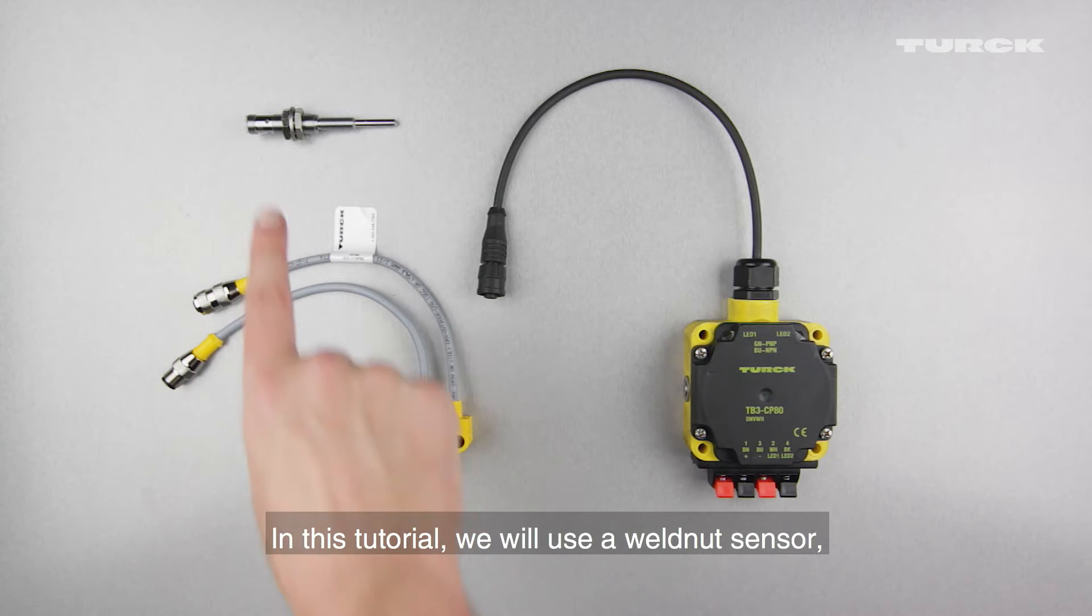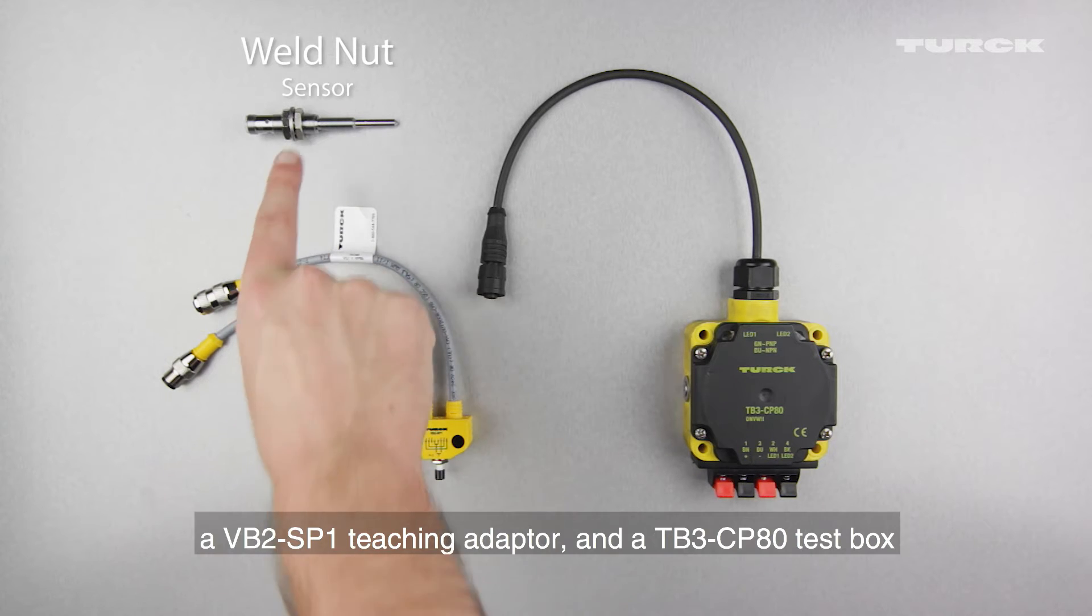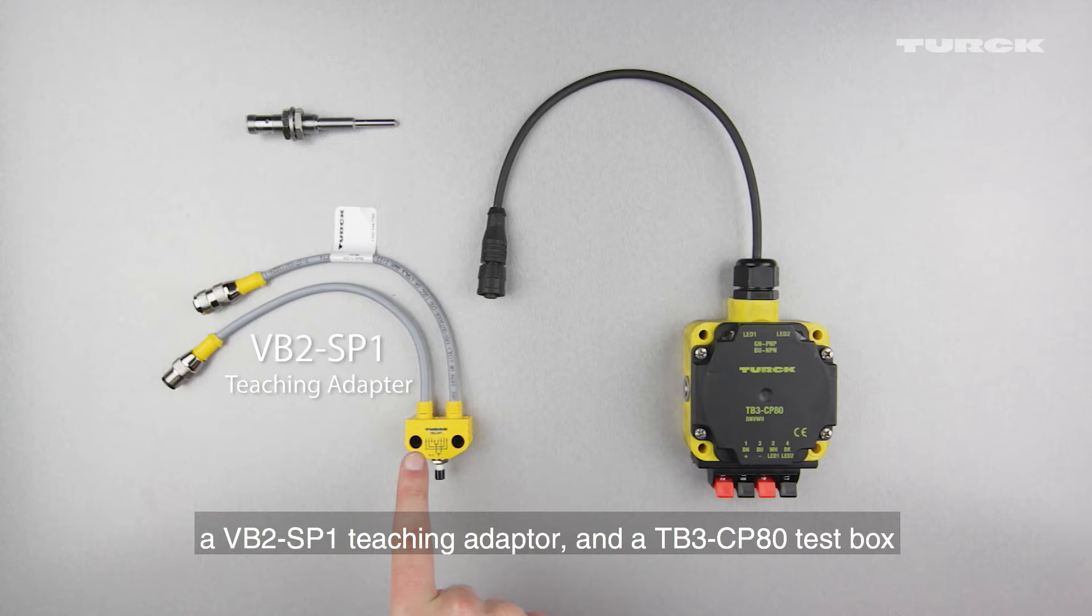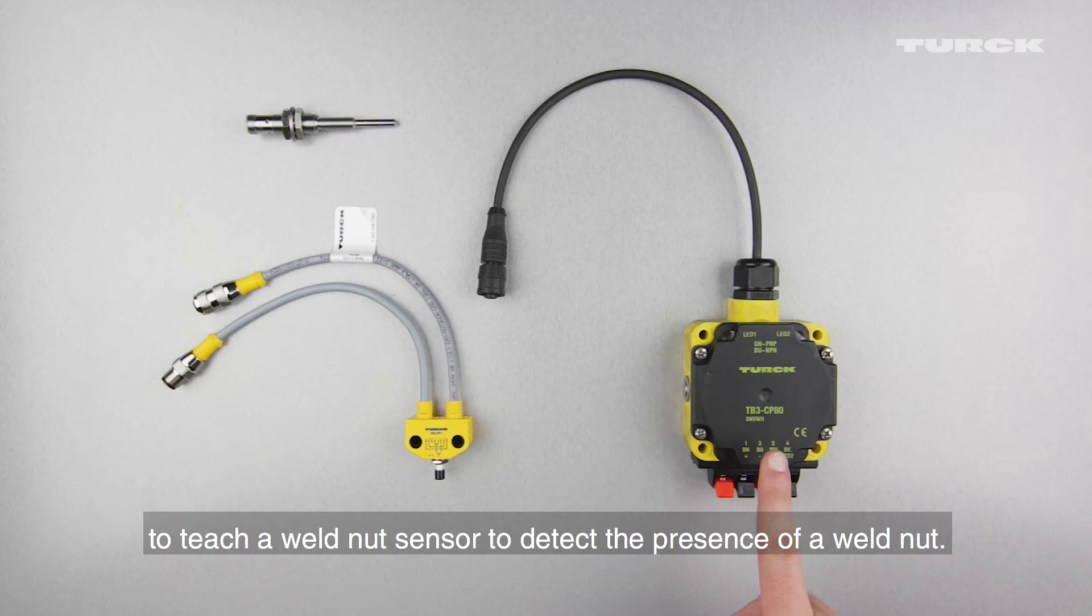In this tutorial we will use a weld nut sensor, a VB2-SP1 teaching adapter, and a TB3-CP80 test box to teach a weld nut sensor to detect the presence of a weld nut.